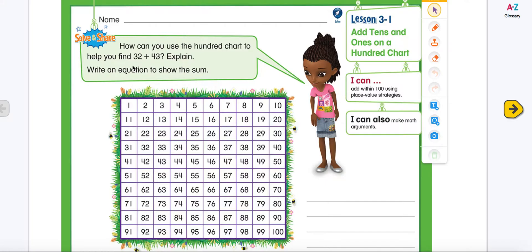So let's look at this problem. We have two addends, 32 and 43, and we're going to add it using this hundred chart. This is our hundred chart, which starts from number 1 all the way to 100.